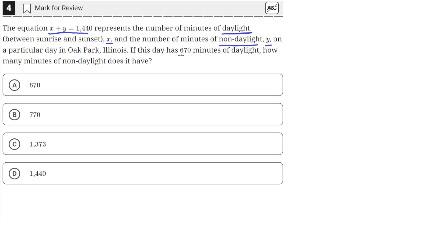If this day has 670 minutes of daylight, how many minutes of non-daylight does it have? So we have this equation x plus y equals 1,440, where x is the number of minutes of daylight and y is the number of minutes of non-daylight.